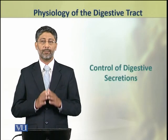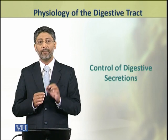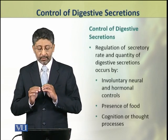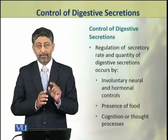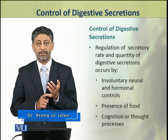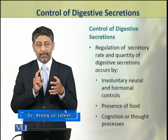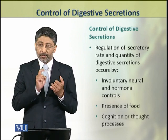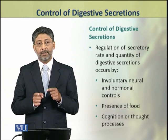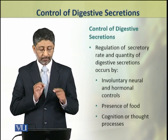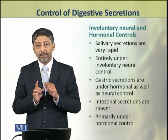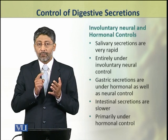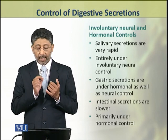Dear students, in this topic we shall discuss the control mechanisms of digestive secretions. The regulation of secretory rate and quantity of the digestive secretions happens by the involuntary neural and hormonal controls, the presence of food, and the cognition or thought processes. We shall discuss these three types of controls in detail one by one. First, we are going to discuss the involuntary neural and hormonal controls.